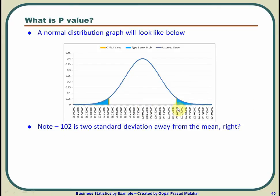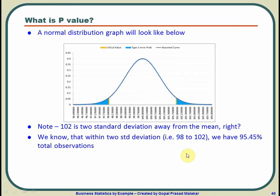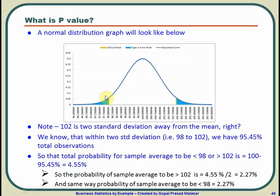100 was the mean and 102 is two standard deviations away. In the normal distribution case, within two standard deviations you have 95.4% of the total observations, which means the probability of getting a value less than 98 or more than 102 is 100 minus 95.45, which is 4.55%. So the probability of sample average being more than 102 is 4.55 divided by 2, which makes it 2.27%. And similarly, the probability of getting an average less than or equal to 98 will also be 2.27%.